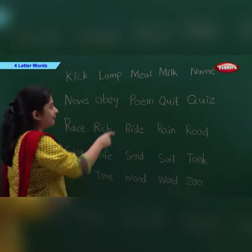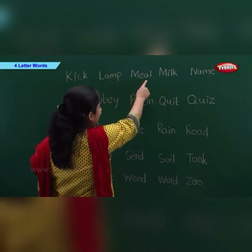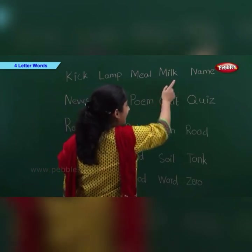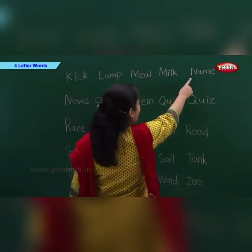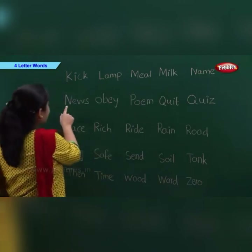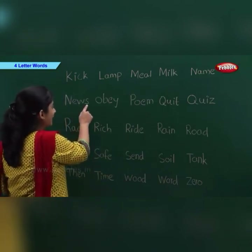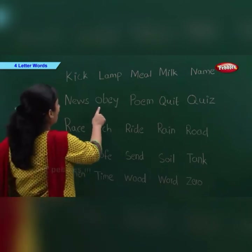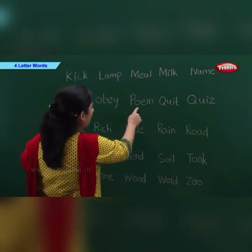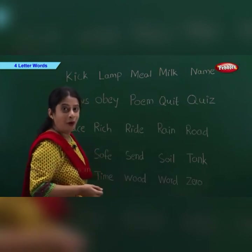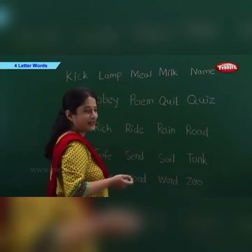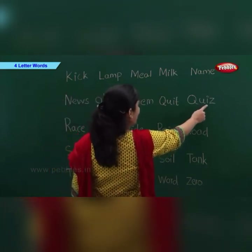M-E-A-L: Meal. M-I-L-K: Milk. N-A-M-E: Name. N-E-W-S: News. O-B-E-Y: Obey. P-O-E-M: Poem. Q-U-I-T: Quit.